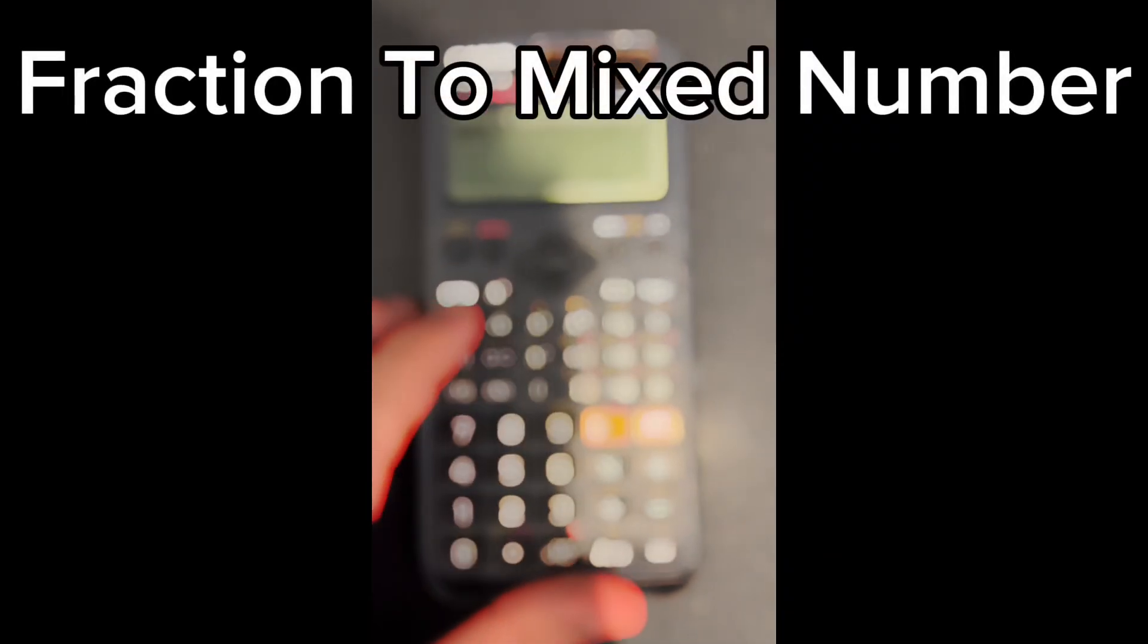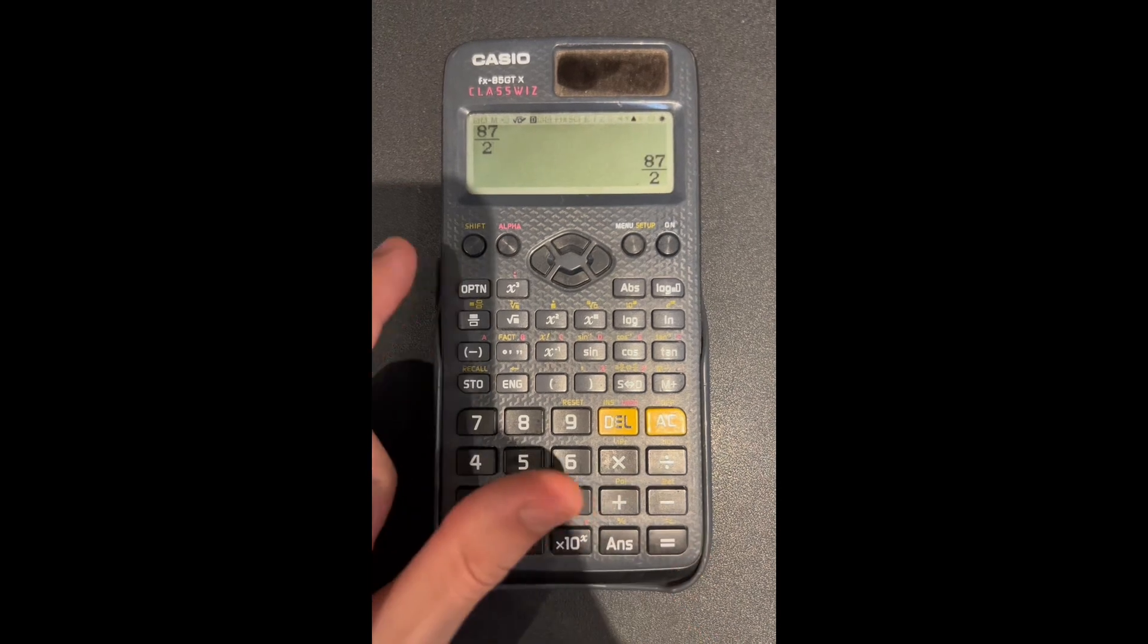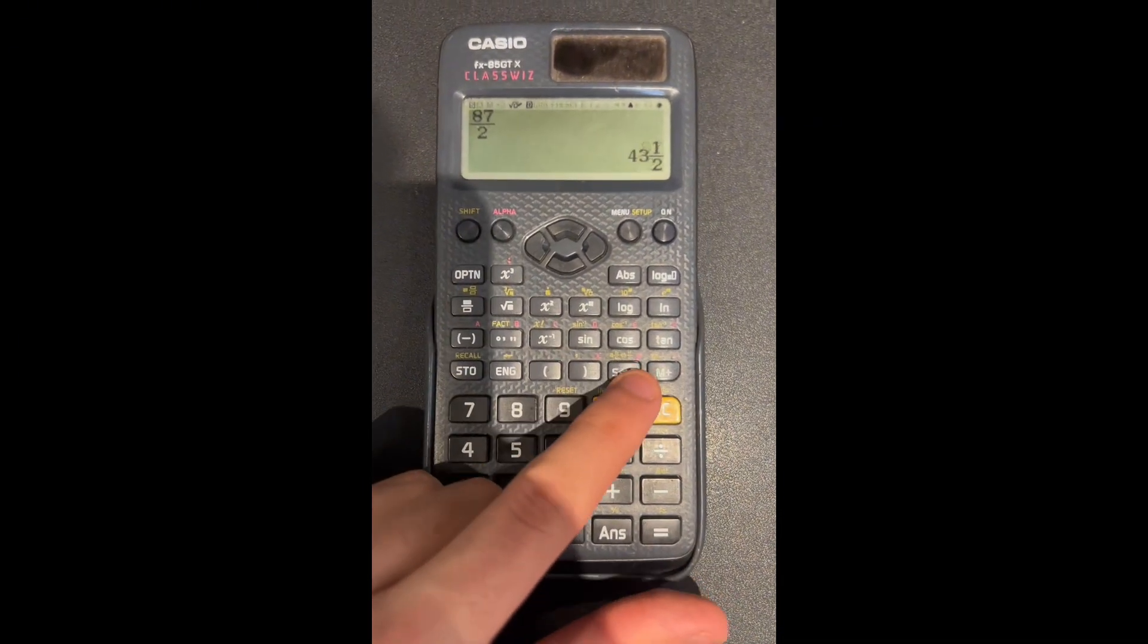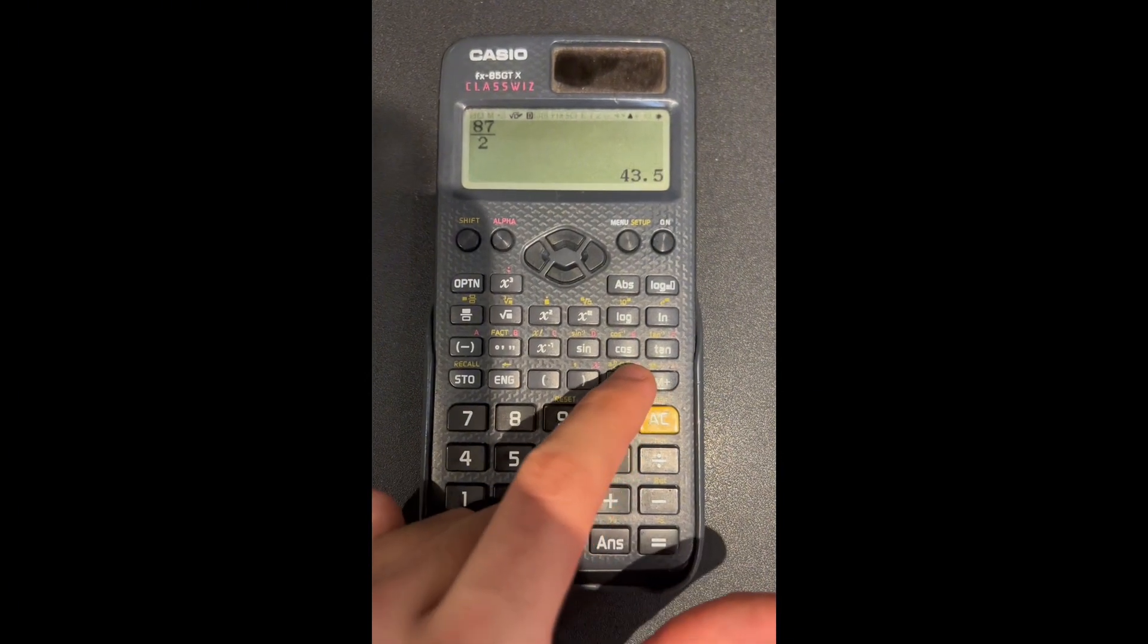Now I'll show you how to convert a fraction into a mixed number. Let's say you have 87 over 2. To convert it to a mixed number, press shift, then press the SD key. As you can see, here it is. Now if you press the SD key twice, it'll give you back the fraction.